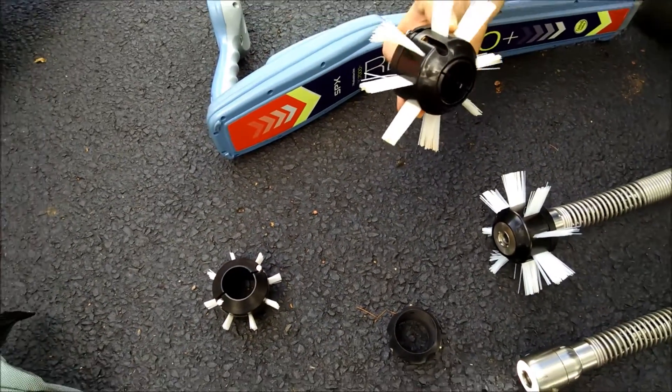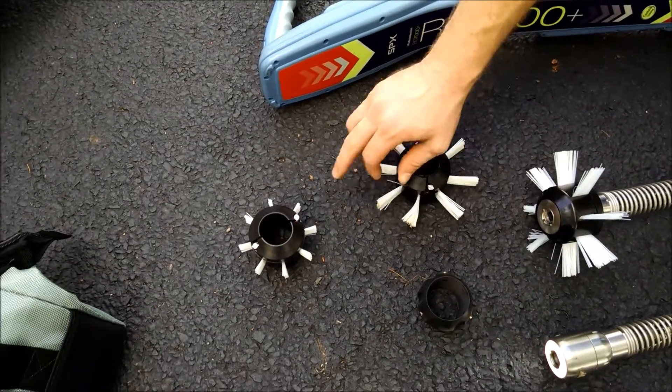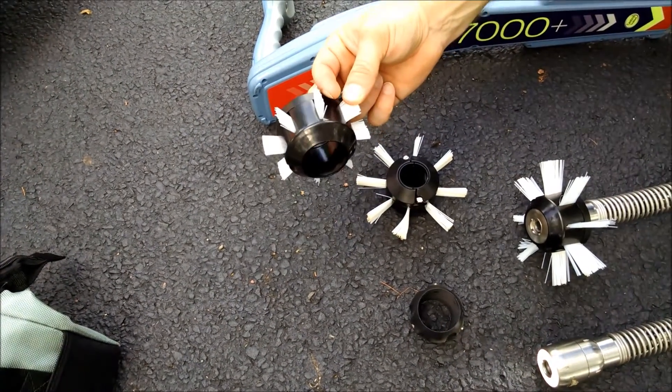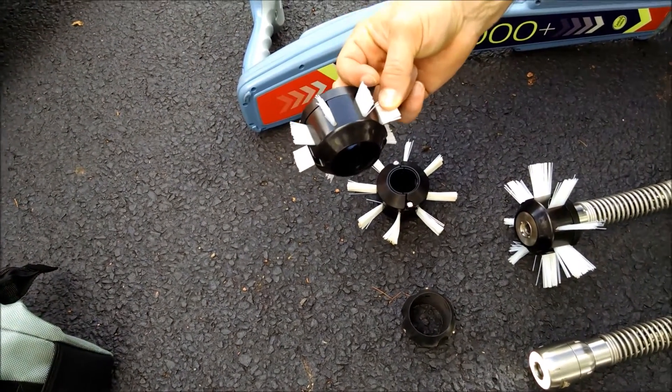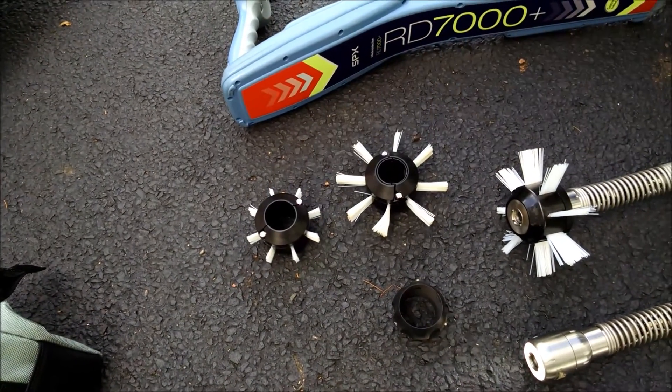Here we see the skid brushes already mounted, the longer brushes. We also have shorter brushes if you are in a smaller diameter pipe but need the camera head just slightly lifted off of the bottom.